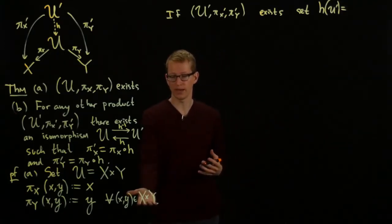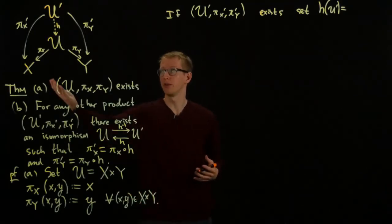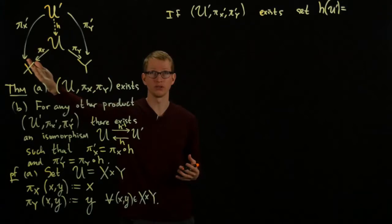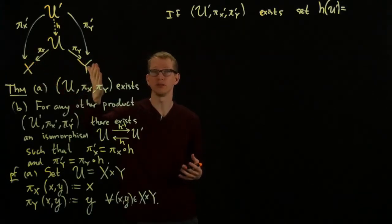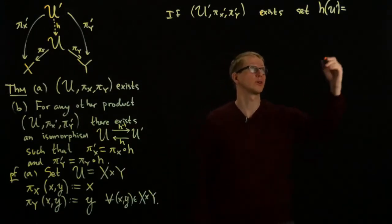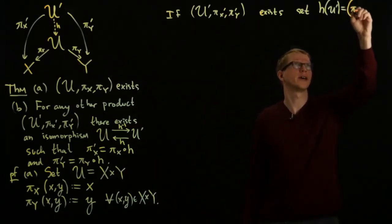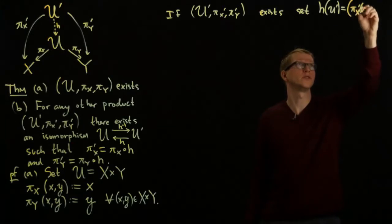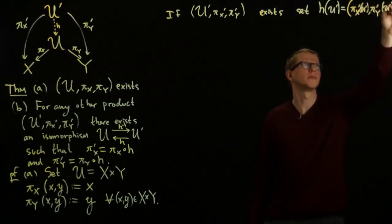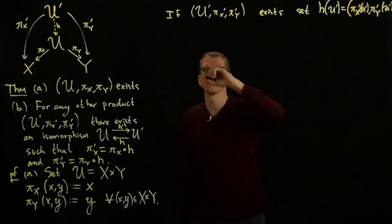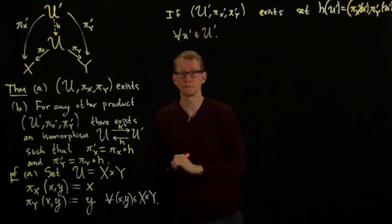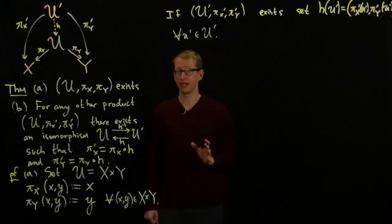We know that we have a cross product here, and we know what the image of U prime is under the projection onto X, and we know what the image of U prime is onto the projection of Y. So let's use those and map those into X cross Y. So πX' of U prime and πY' of U prime for all U prime in U prime. So that's what we'll set H to be.